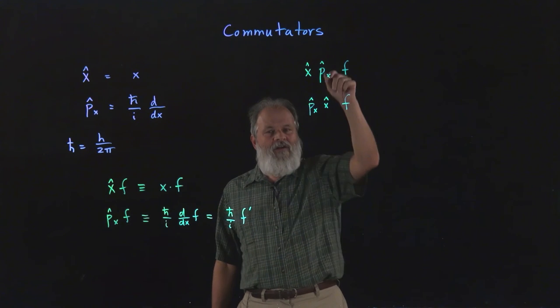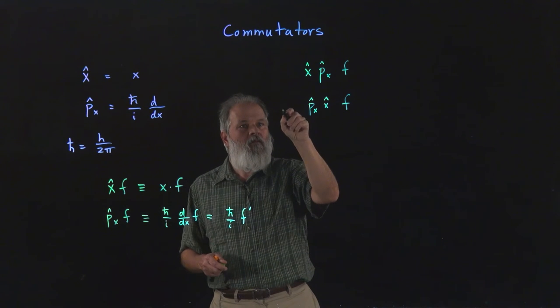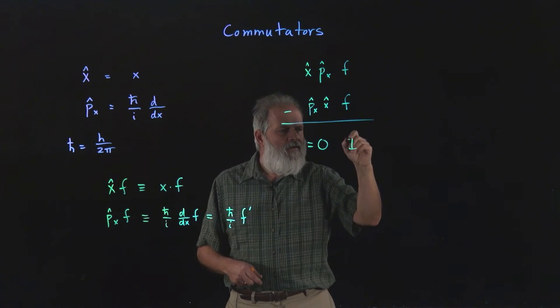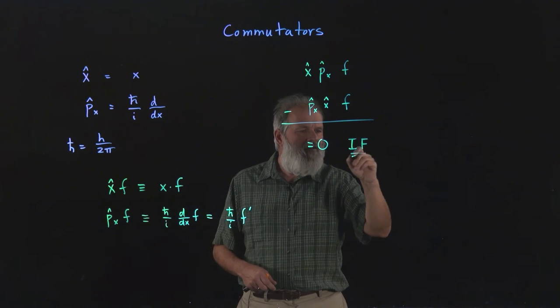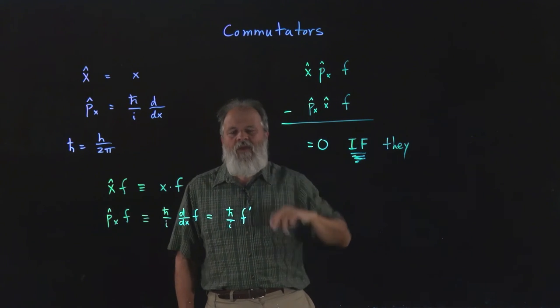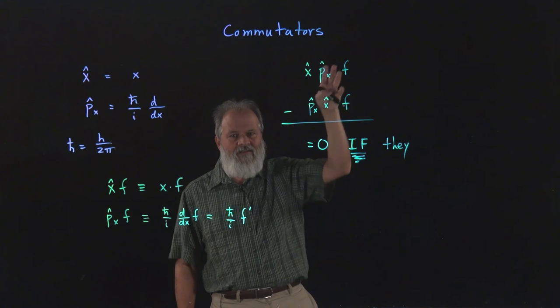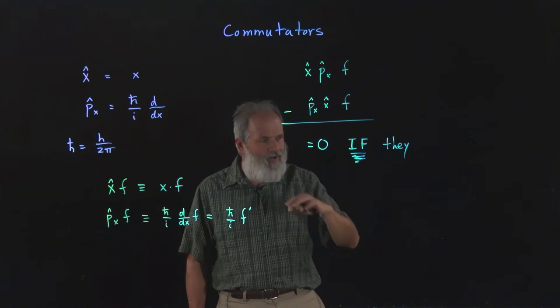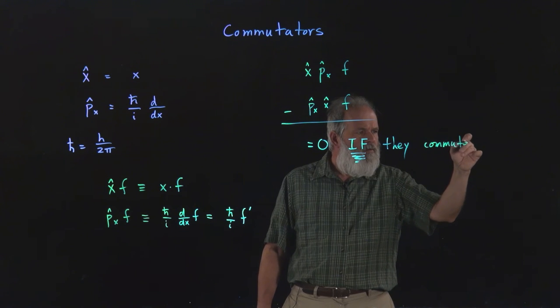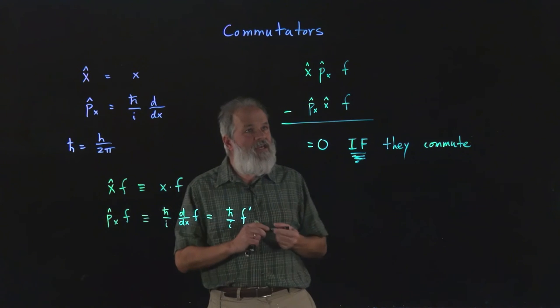Now the commutator says well if these two are the same, then if we subtract one from the other, that's equal to zero if they commute. If it doesn't matter which order you apply the operators, then if you get the same answer and subtract the same answer from itself, then you get zero.